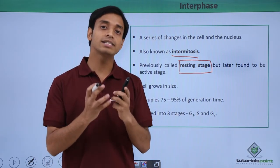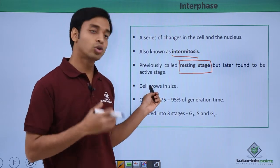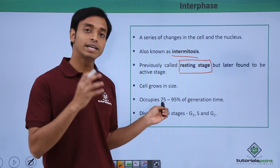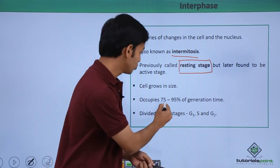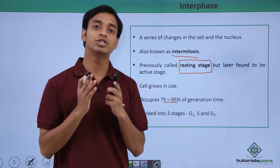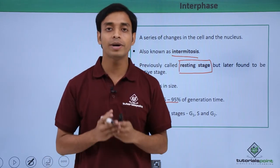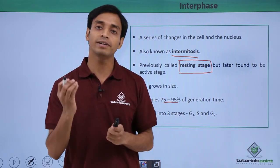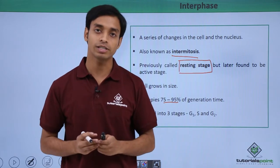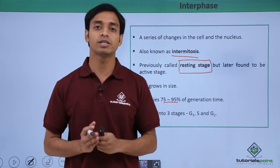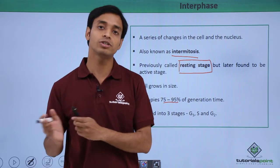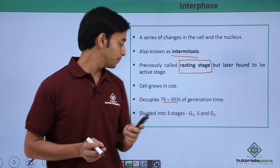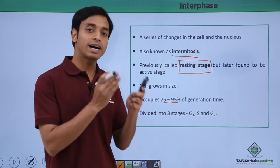So it is a highly active stage. Here in interphase the cell grows in size — its size doubles — and its growth happens in this phase. This phase called interphase involves about 75 to 95 percent of the total generation time. Generation time is the total time taken by a parent cell in order to divide into new daughter cells, so about 95 percent of the whole generation time is taken by interphase.